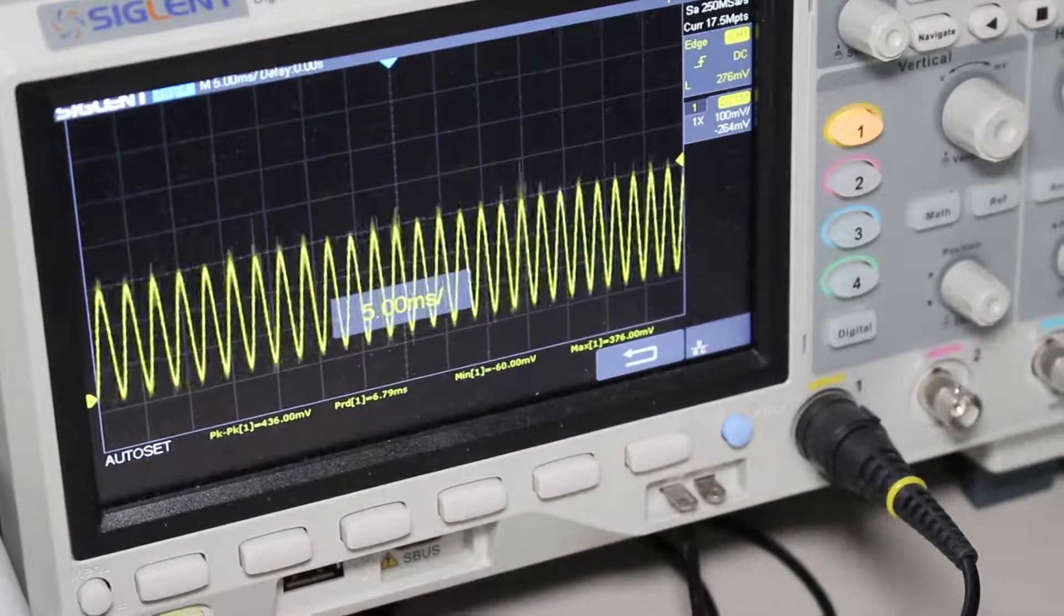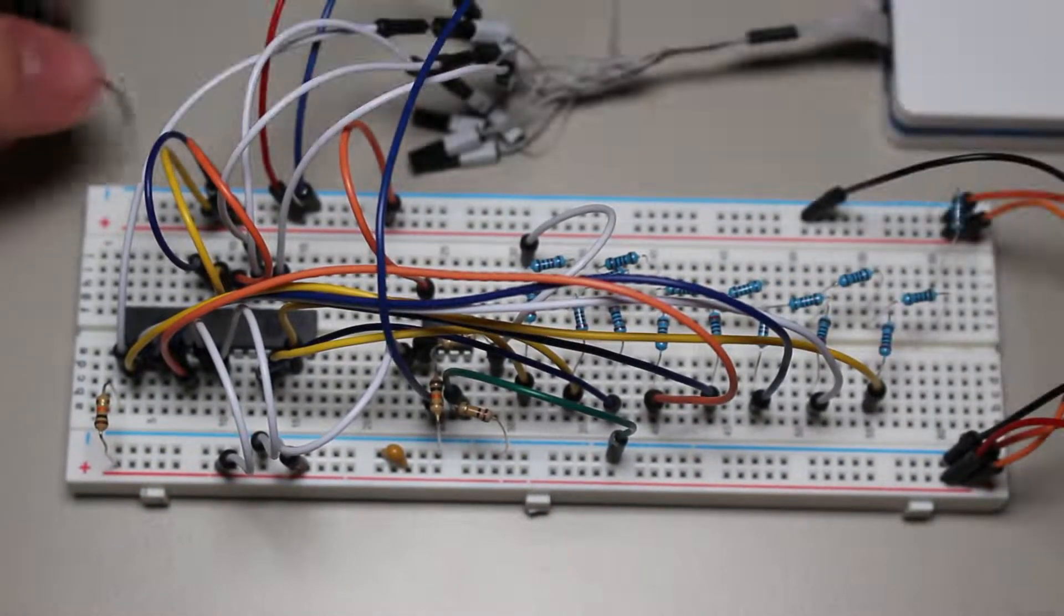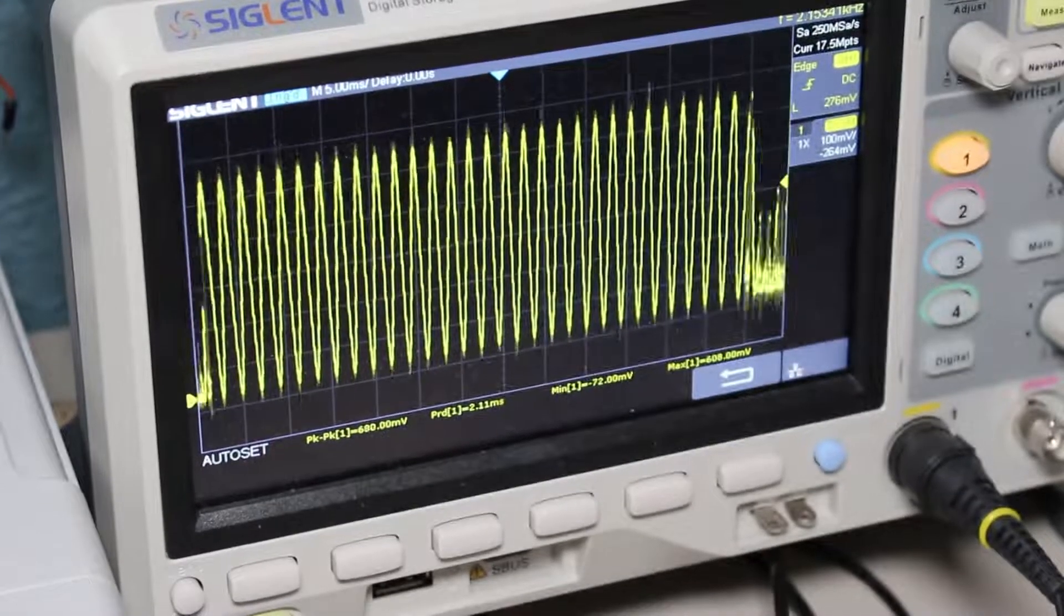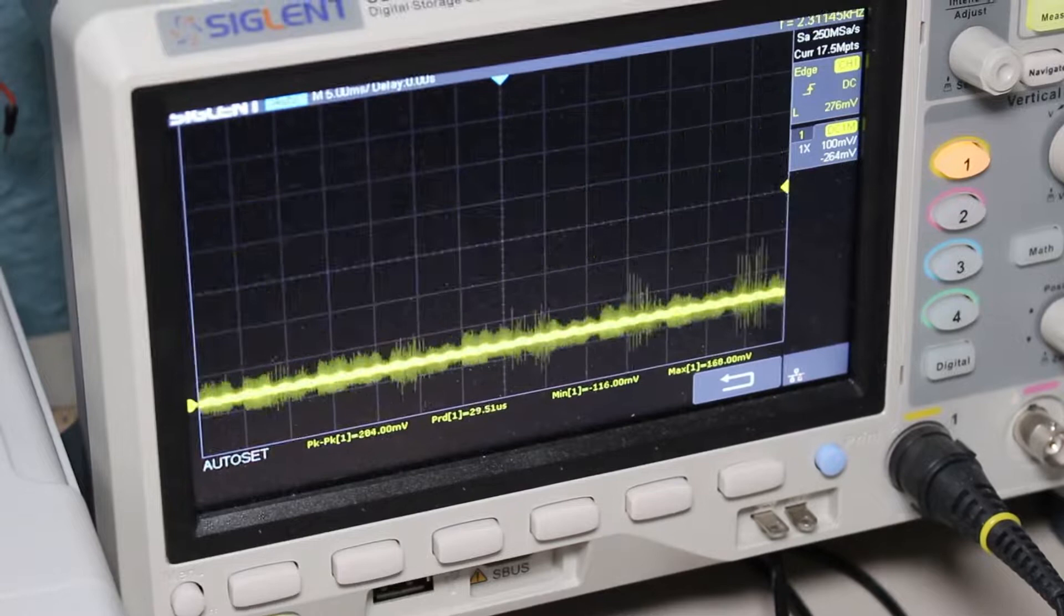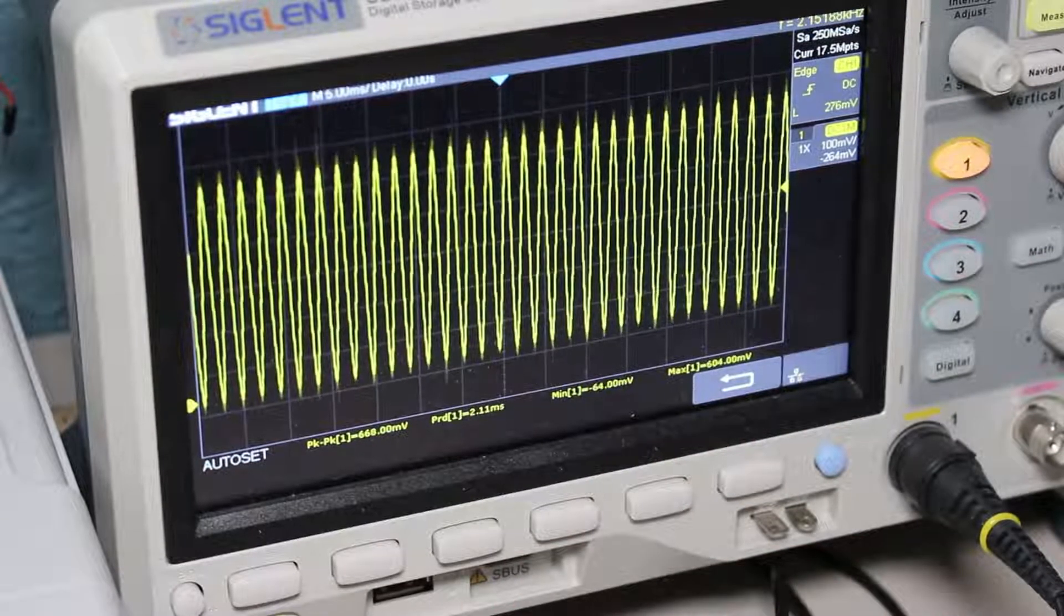While all this function generating works as expected, what use is it if we can't even attach a load? Currently, attaching a load such as a speaker will completely break down the output voltage because the currents flowing through the DAC also have to power the load. So in order to preserve the output voltage, we need an op-amp buffer.